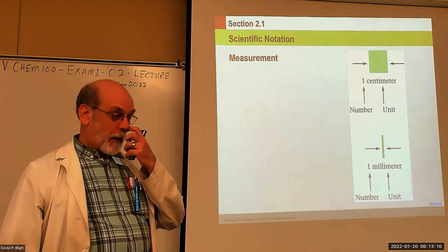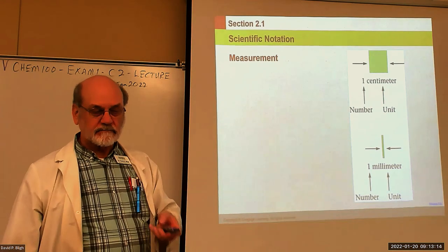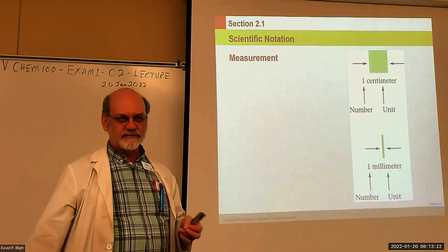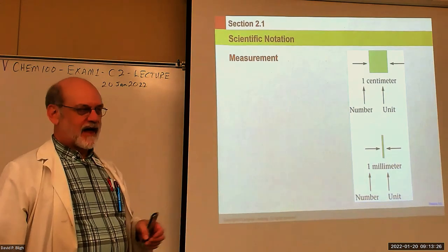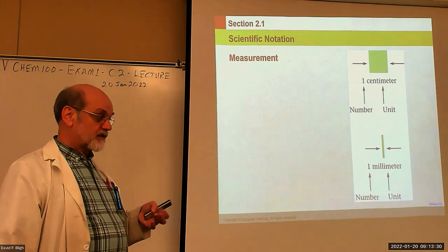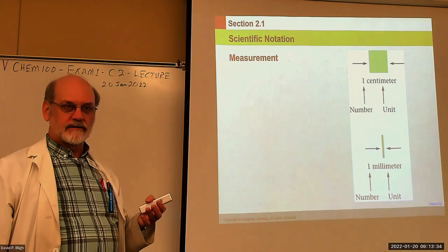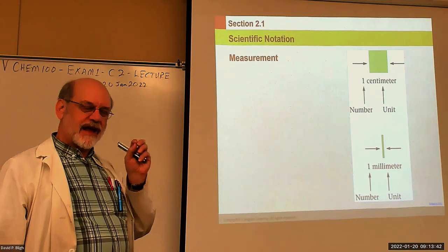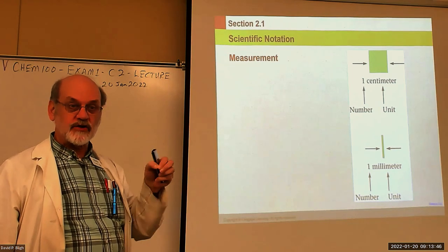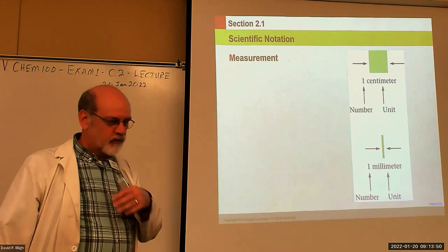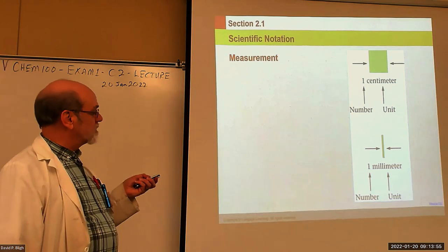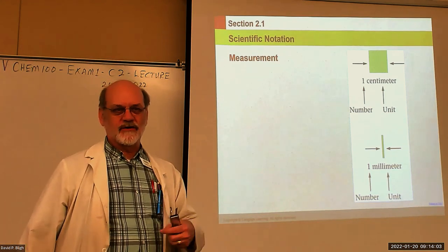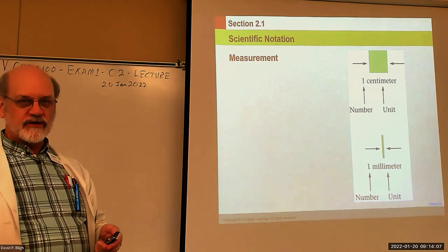I said 99% of measurements have a number and a unit. There are instruments — what I call black boxes — where you put your sample in and it spits out a number, and you don't know what's going on inside. They can give you a number with no units, and if you understand how the instrument performs its function, that number might mean something to you. But for this class, a measurement is always going to have a number and a unit.